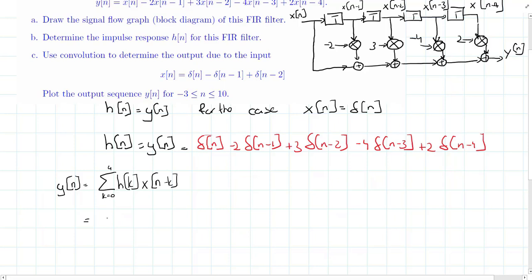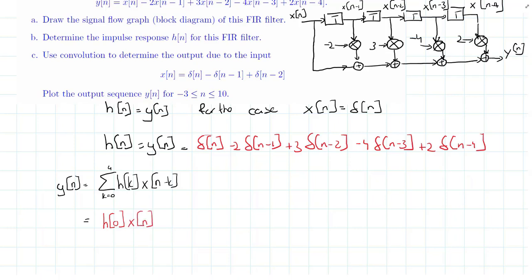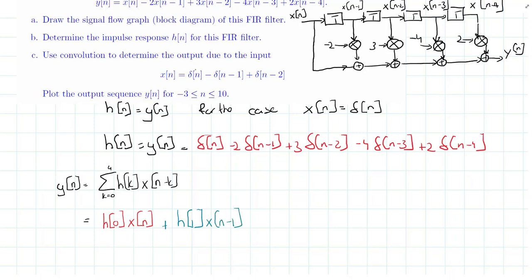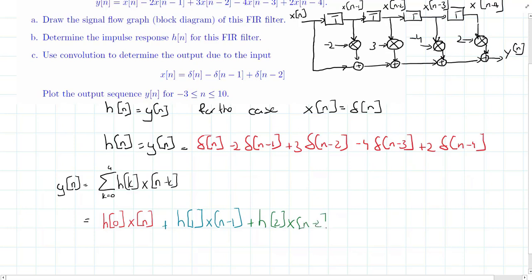For k=0 we have h[0] times x[n]. For k=1 we have h[1] times x[n-1]. For k=2 we have h[2] times x[n-2]. We continue this up to k=4, where the last term is h[4] times x[n-4].